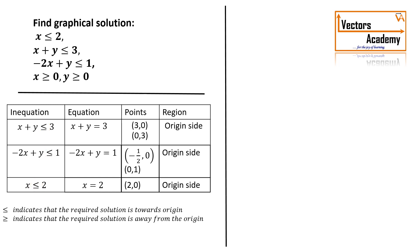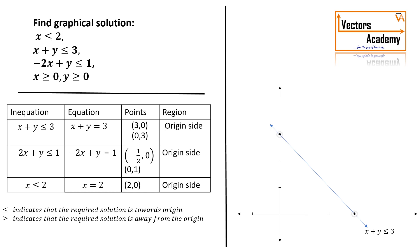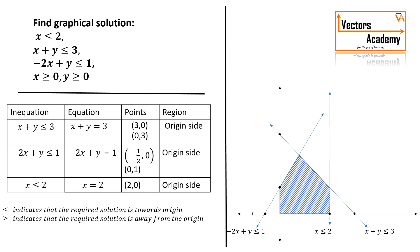Starting with the graph: the first line has points (3, 0) and (0, 3). The second line has points (-½, 0) and (0, 1). The third inequation x ≤ 2 corresponds to the line x = 2, parallel to the y-axis passing through (2, 0). Once all lines are plotted, we need the region towards the origin — below all the lines — and also in the first quadrant due to the last two inequations. The region satisfying all the inequations is the feasible region in the first quadrant.